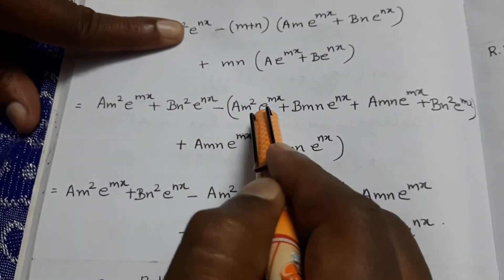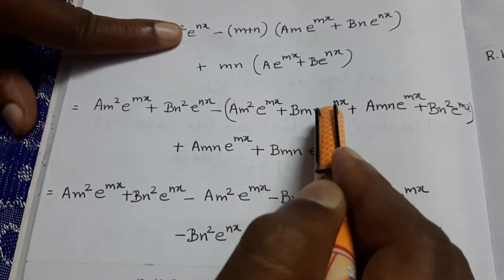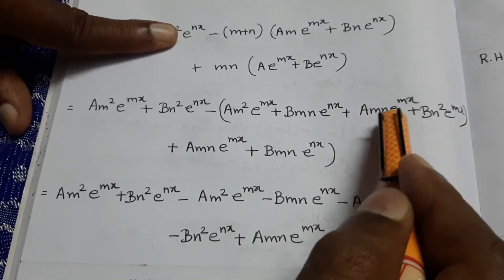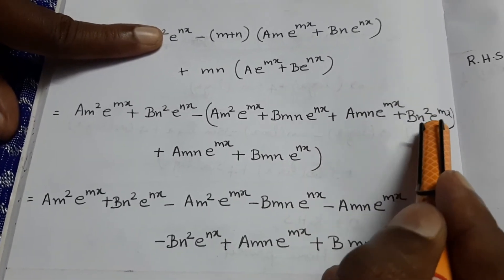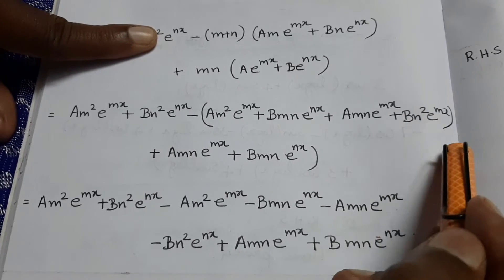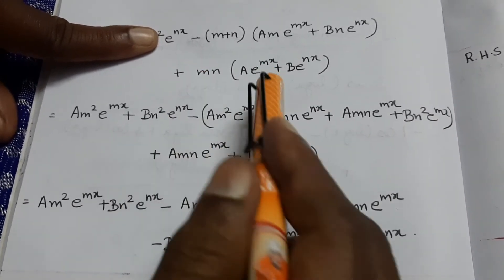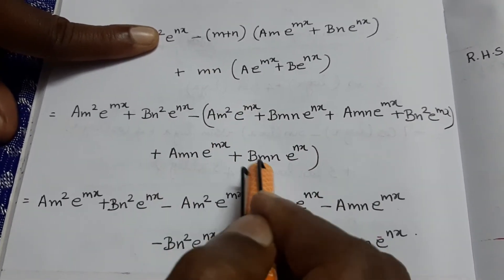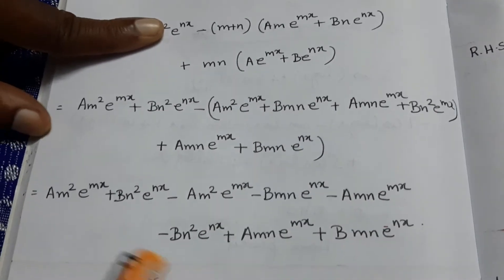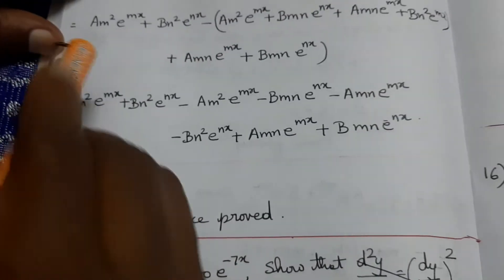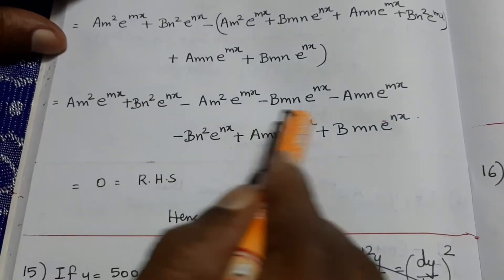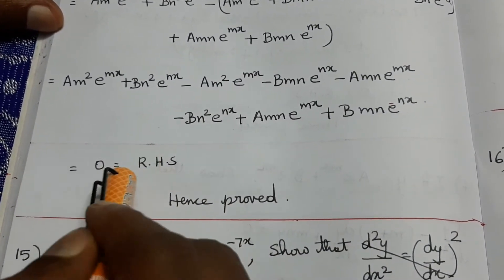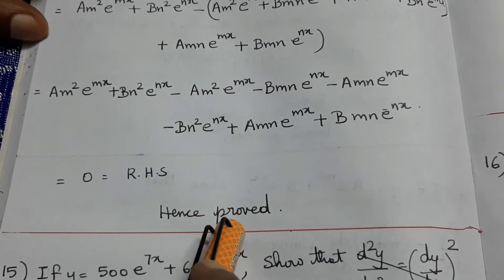Expanding: a·m²·e^(mx) plus b·n²·e^(nx) minus (m+n)(a·m·e^(mx) plus b·n·e^(nx)) plus mn(a·e^(mx) plus b·e^(nx)). All terms cancel out giving 0. Hence proved.